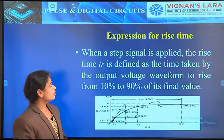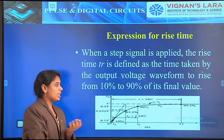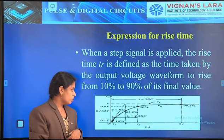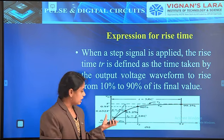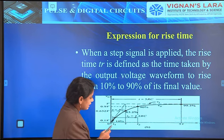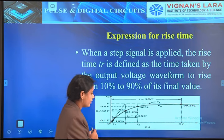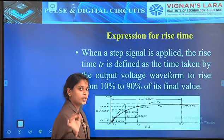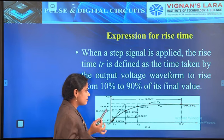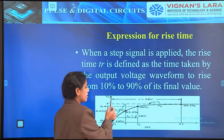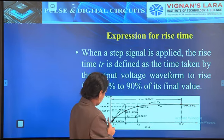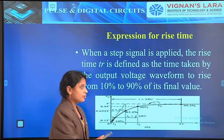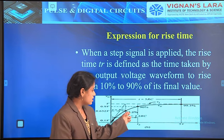Next we have to find the rise time expression for this particular output waveform. First we have to observe the output waveform. This is the output waveform occurring at the output side when a step signal is passing through the low pass RC circuit. At 5RC, the maximum value is reached. At 1RC, the value will be at 0.632, that is 63.2 percent.